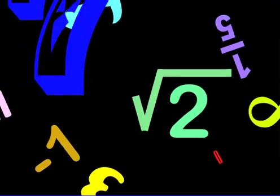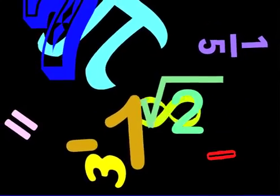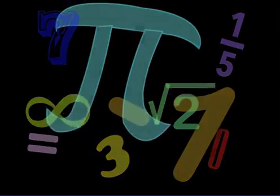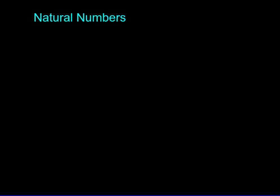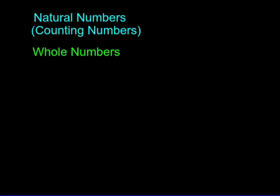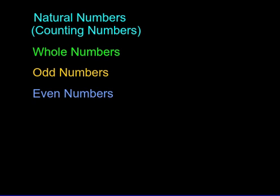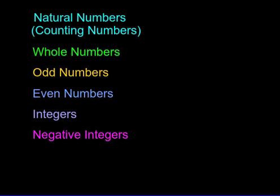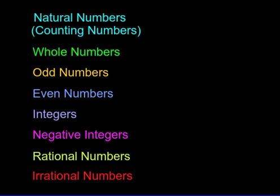In this episode, we will explain some definitions in mathematics. We will look at natural numbers or counting numbers, whole numbers, odd numbers, even numbers, integers, negative integers, rational numbers, and irrational numbers. So if you're not sure about one of these terms, you should pay special attention.